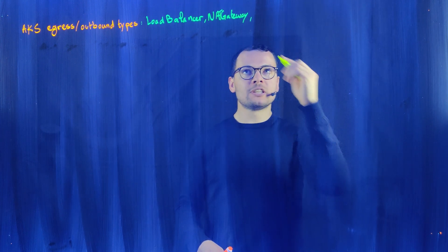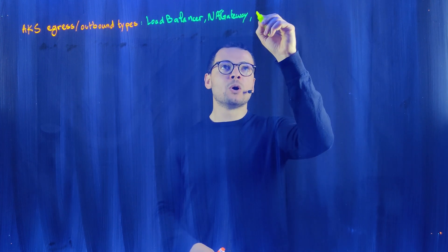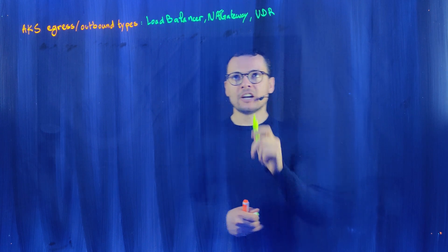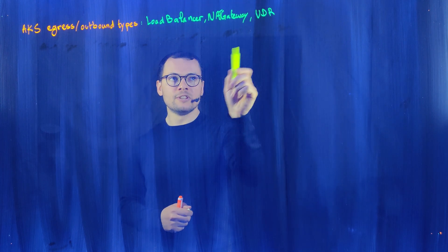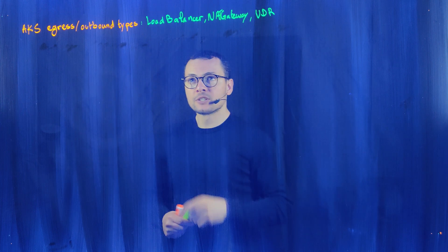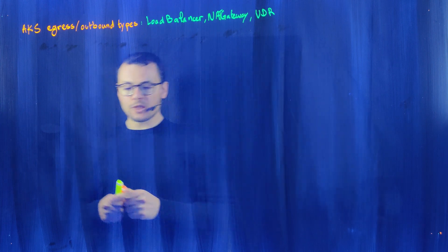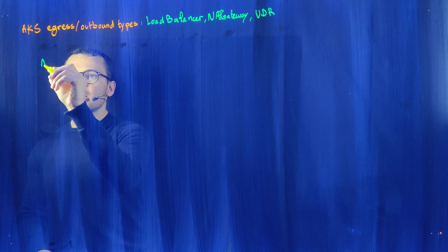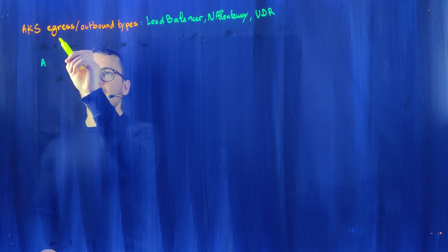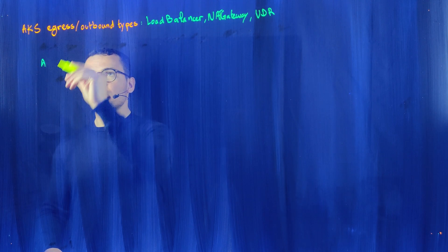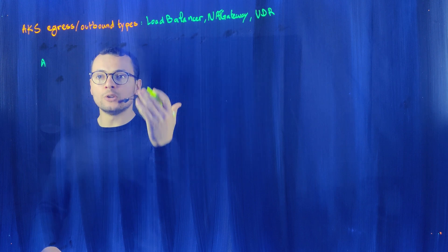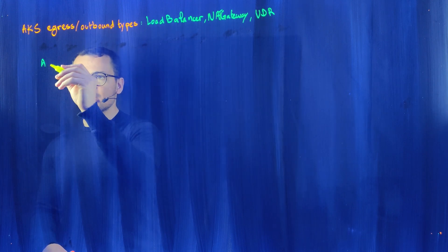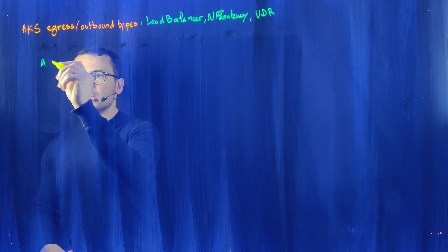The third mode is called user-defined routing, or UDR. In this lightboard session, I'll explain all three outbound types. Starting with the load balancer: within my AKS cluster, I will control the egress traffic within the nodes, not the control plane. The control plane is managed by Azure, so I don't have access to it.